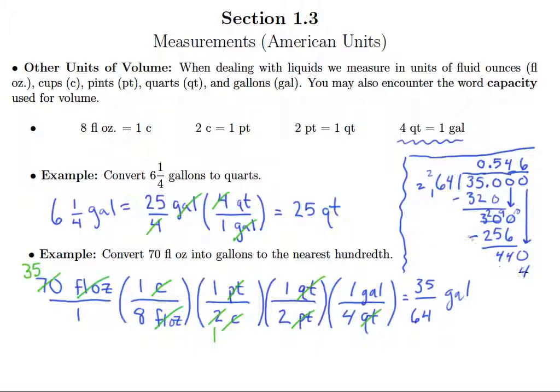But at this point, I'm one past the hundredths place. So really, I have enough information without even finishing here to have my problem rounded correctly. So because this is larger than 5, I know that this bumps up to a 5. So this is going to be 70 fluid ounces is about 0.55 gallons.